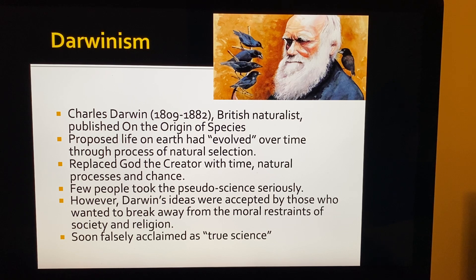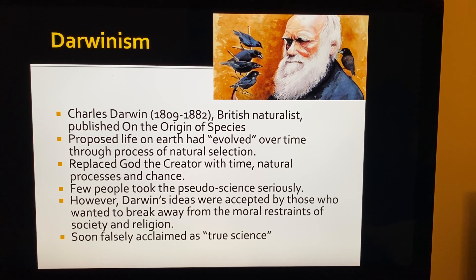The first was Darwinism. Charles Darwin, 1809 to 1882, was a British naturalist. He published 'On the Origin of Species' and proposed that life on earth had evolved over time through a process of natural selection. This would replace God the creator with time, nature, and chance — basically saying that species could evolve into new species, kinds into new kinds. Few people took this pseudoscience seriously at first.